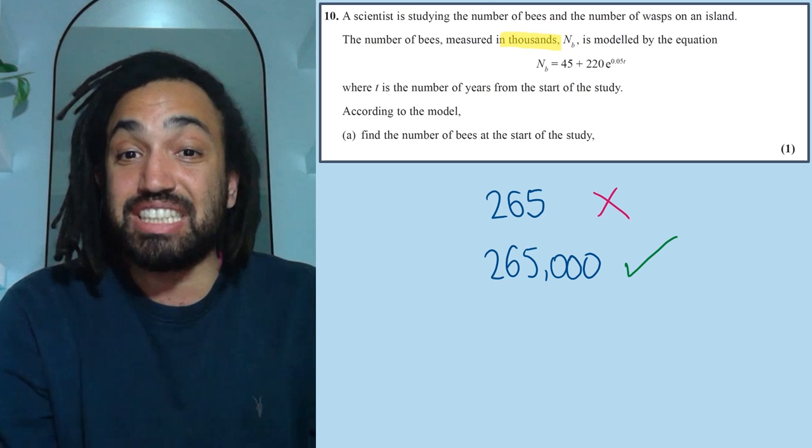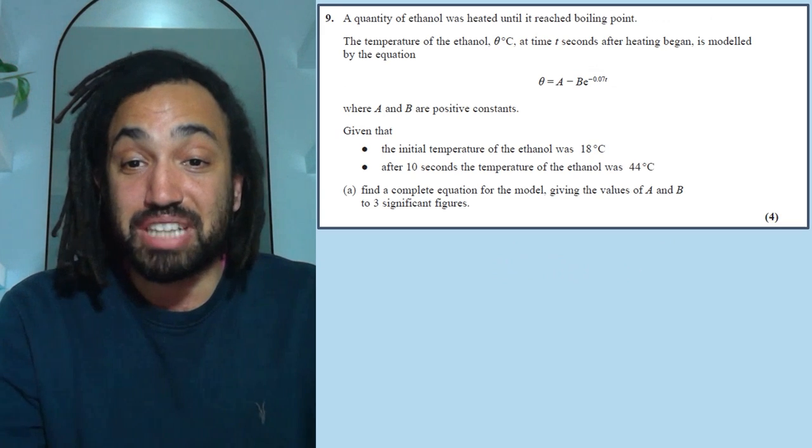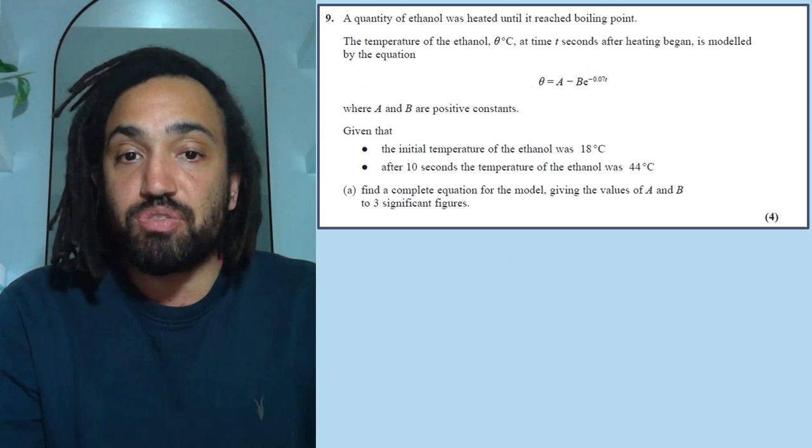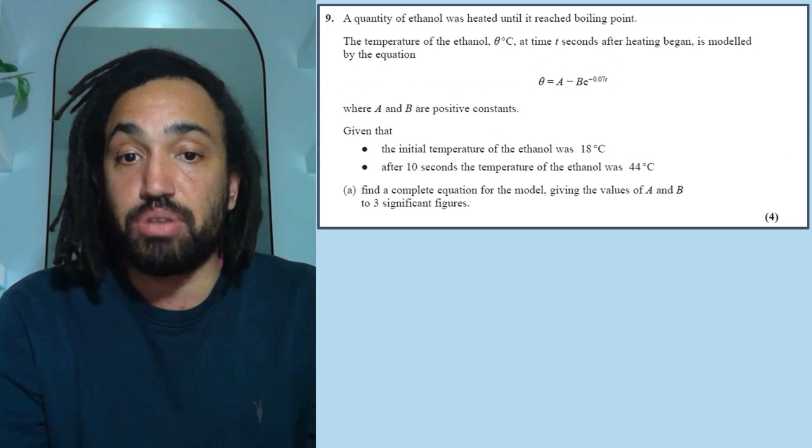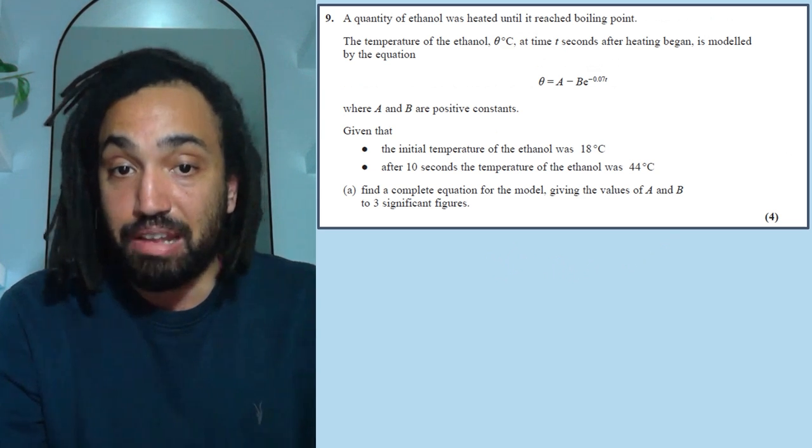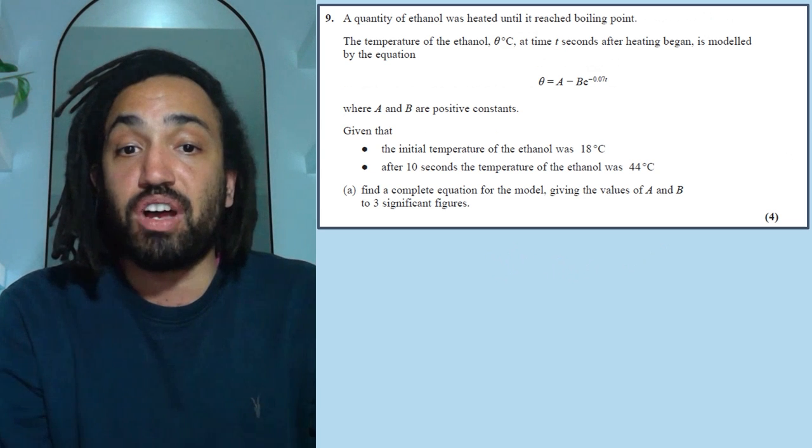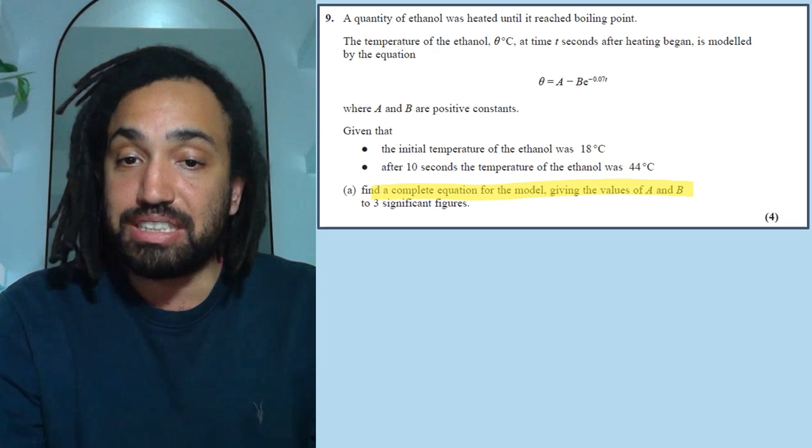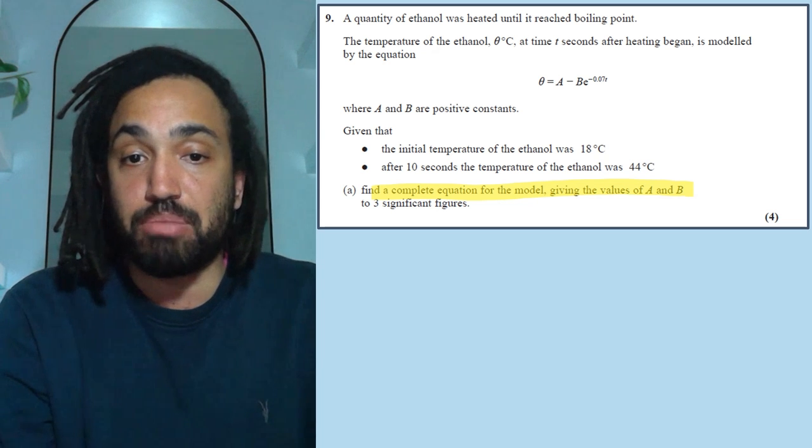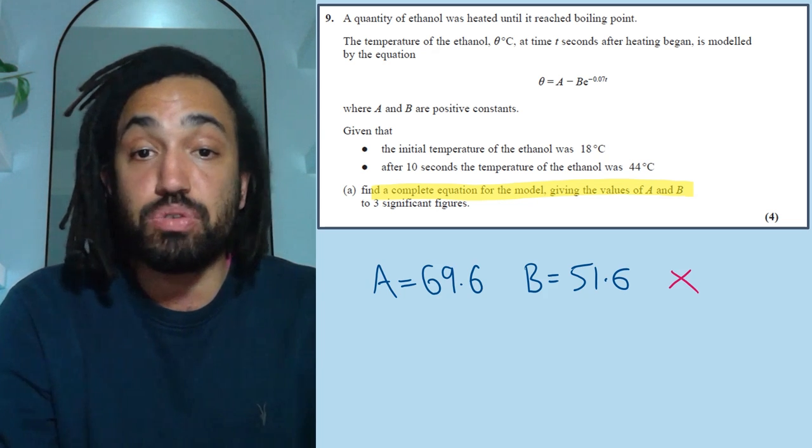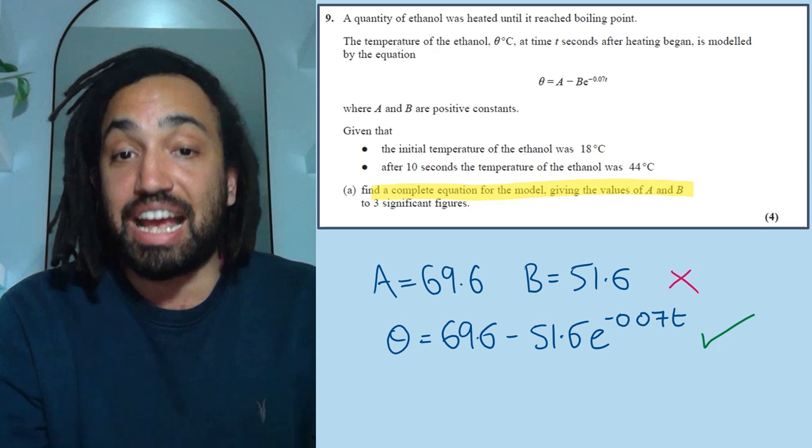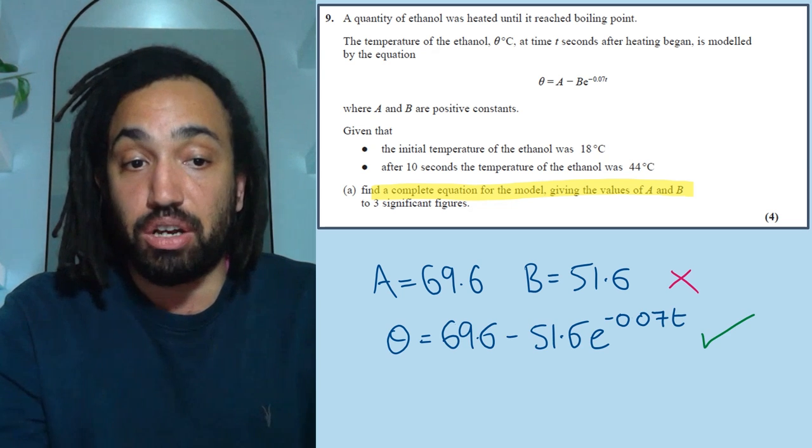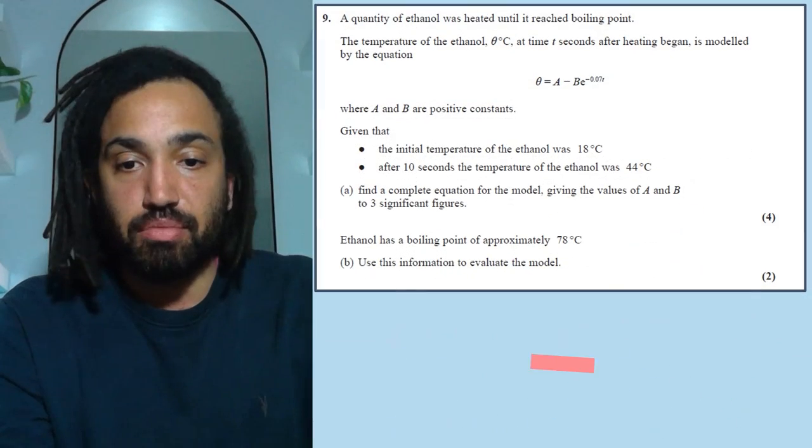Next question, I see this one, I see students make mistakes all the time on this. It's fairly straightforward to sub in the values and to find values for A and B. But the question asks us to find a complete equation of the model. So just writing down A and B will not get you the accuracy marks, you must substitute it into the formula and write it as the complete equation that they ask for.